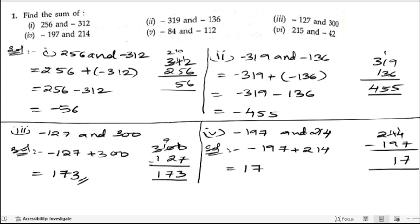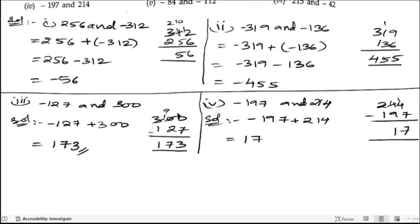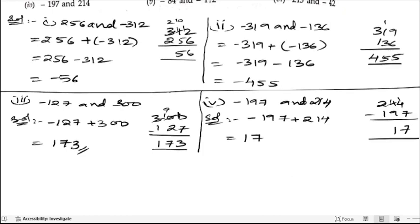Next, now we will take the fifth bit. Fifth bit is minus 84 and minus 112. So let us write down.